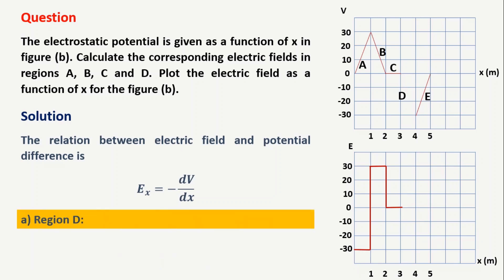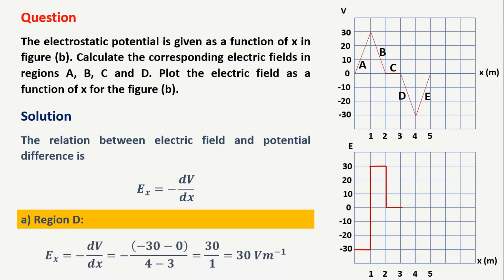Then region D. Here the potential goes from 0 volts to minus 30 volts. So the change in voltage is minus 30 minus 0, which is minus 30, over a distance of 1 meter (4 minus 3). E_x equals minus dV by dx, so minus (minus 30) divided by 1 equals 30 volts per meter. Between 3 to 4 meters, the electric field remains constant at 30 volts per meter.